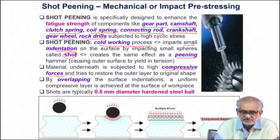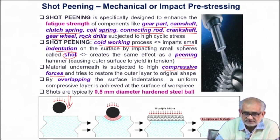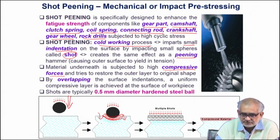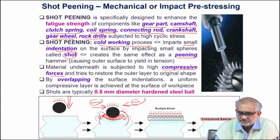A spherical object is propelled onto the surface at very high velocity. When it impacts the surface, a deformation zone is created. The material is pushed downwards, and the reaction causes the material to try to come back. When it tries to come back, the state of stress created onto the surface is compressive in nature — producing residual compressive stress on the surface.